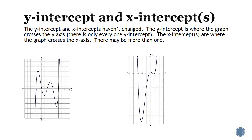Y-intercepts and x-intercepts have not changed. The y-intercept is where the graph crosses the y-axis, and the x-intercept or intercepts is where the graph crosses the x-axis. For the y-intercept, there should only be one, but there may be more than one x-intercept.